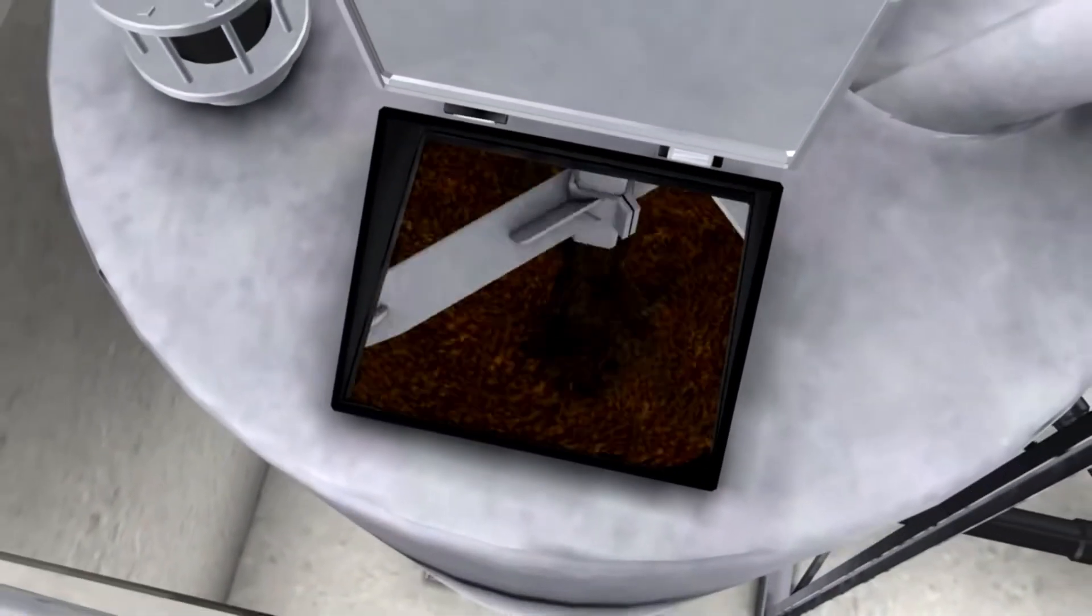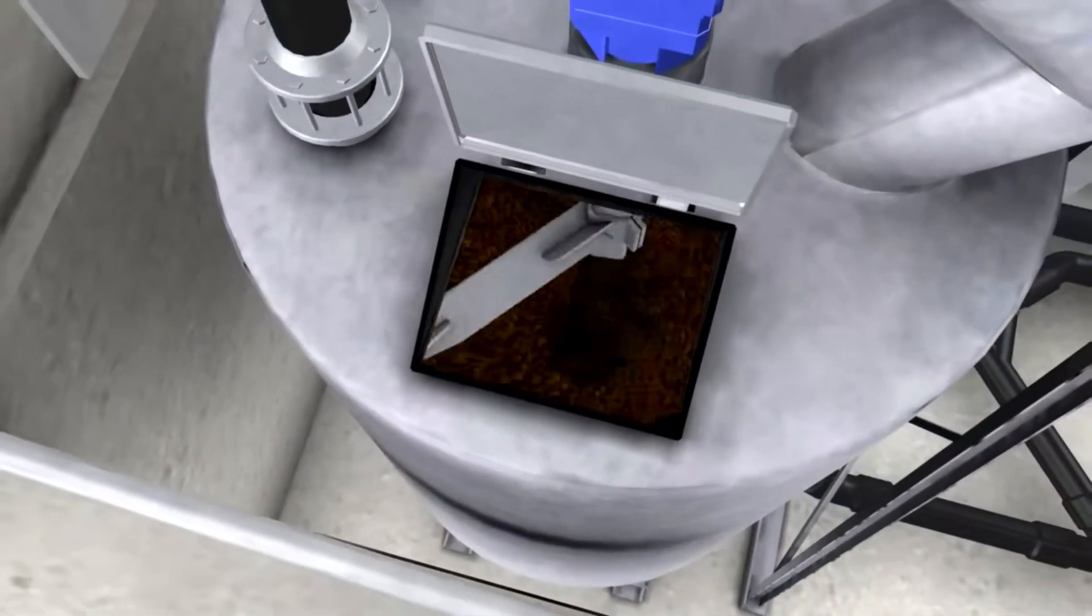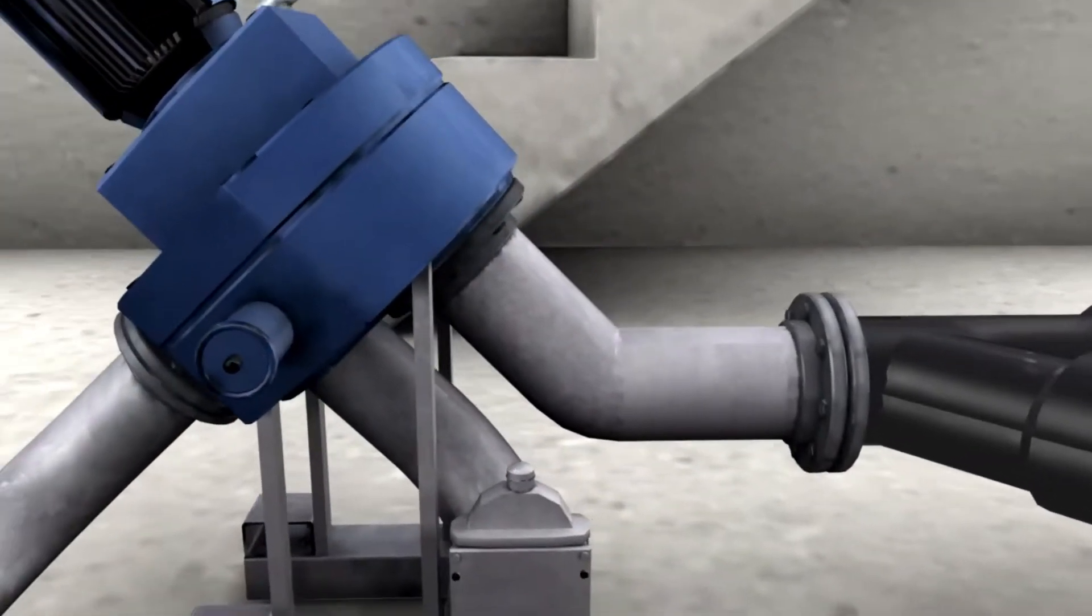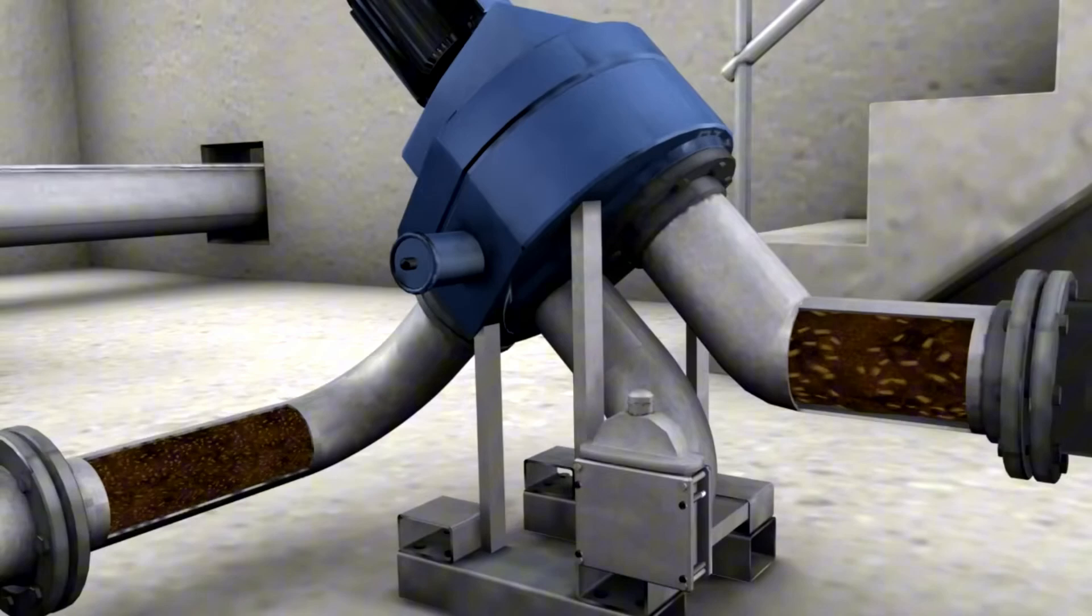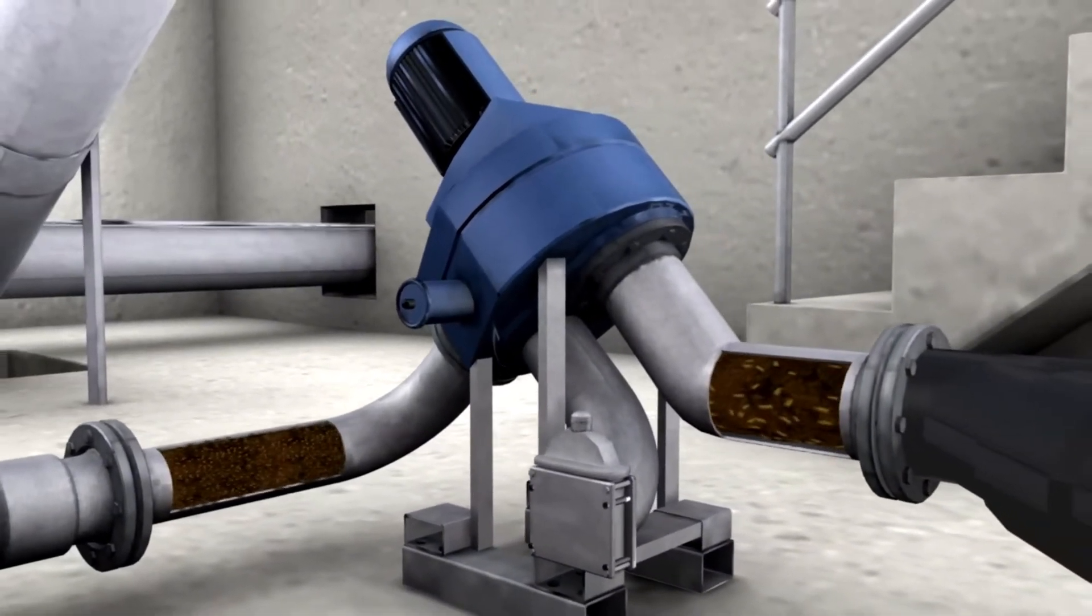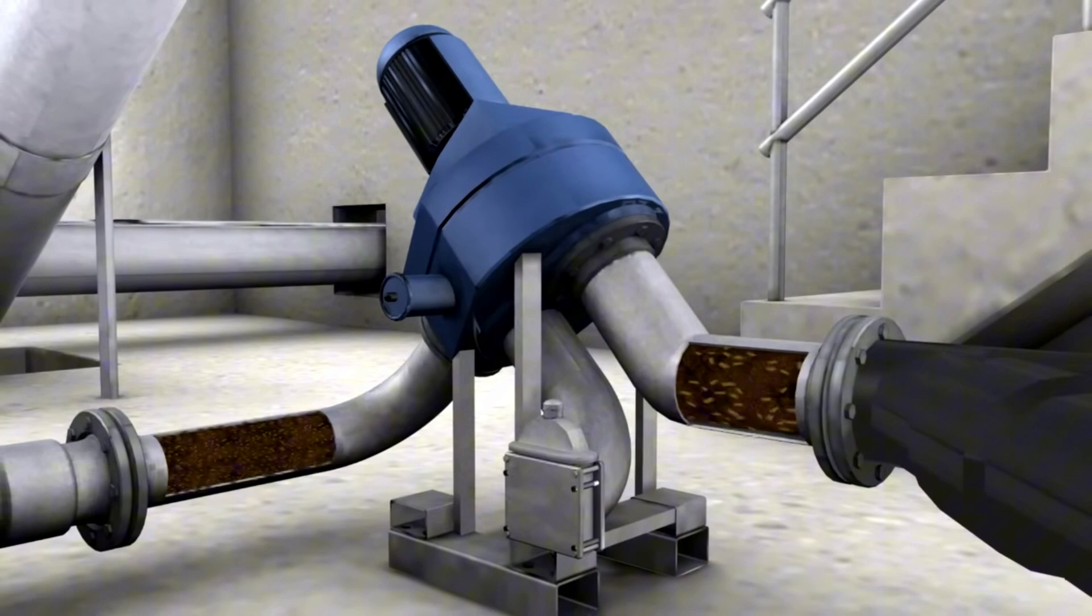Using an agitator, the materials are mixed into a homogenous input material. This process is normally repeated every hour. When the stirring process is complete, the substrate is pumped into the fermenter through a macerator. The macerator ensures that no impurities reach the fermentation process.